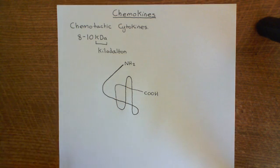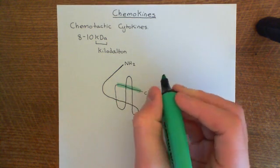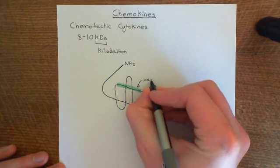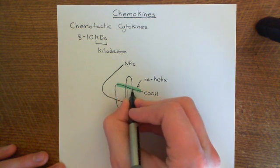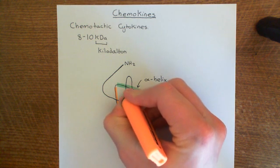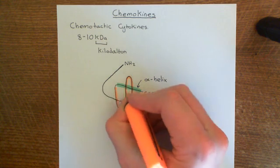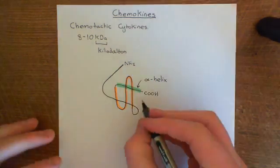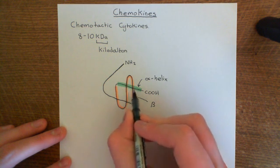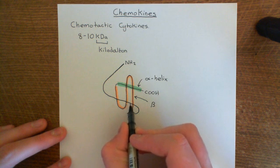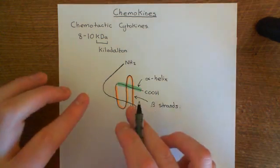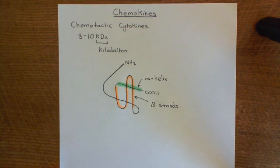Let me highlight some specific portions of this structure. This portion at the front, which I've highlighted in green, is an alpha helix — it's in front of the three beta strands. Those three beta strands are all in the same plane together, making a small beta pleated sheet, highlighted in orange. Then in the plane in front of them you have this alpha helix and a linker here. What holds this structure together? Well, there are two important disulfide bonds. In most chemokines, you have four cysteine amino acids.